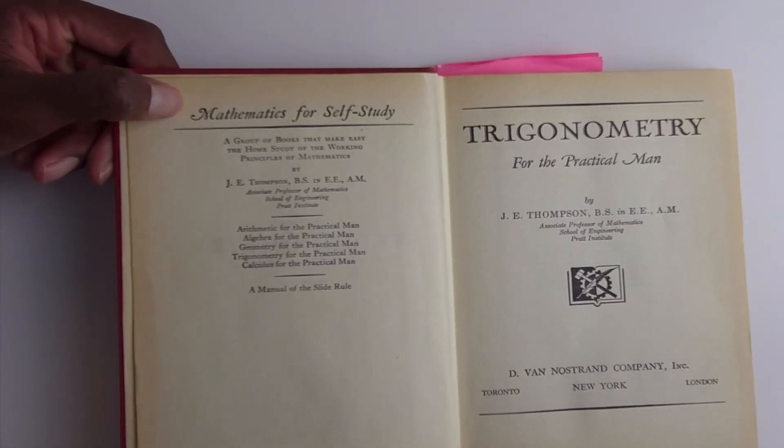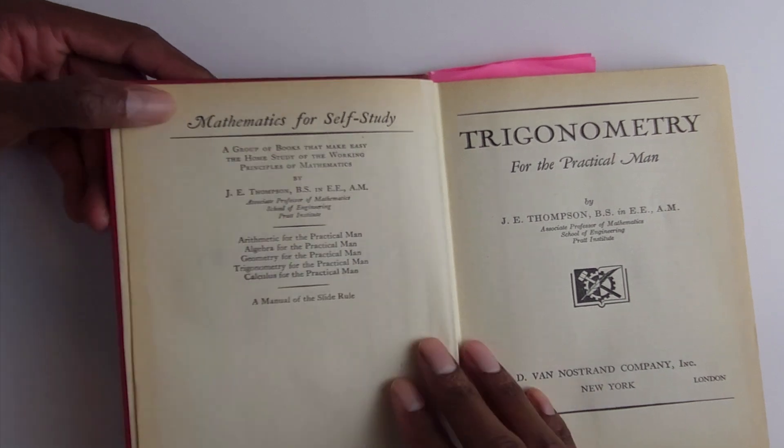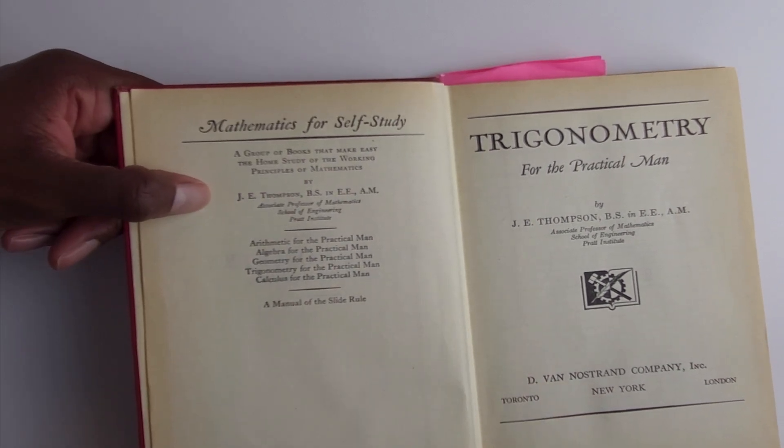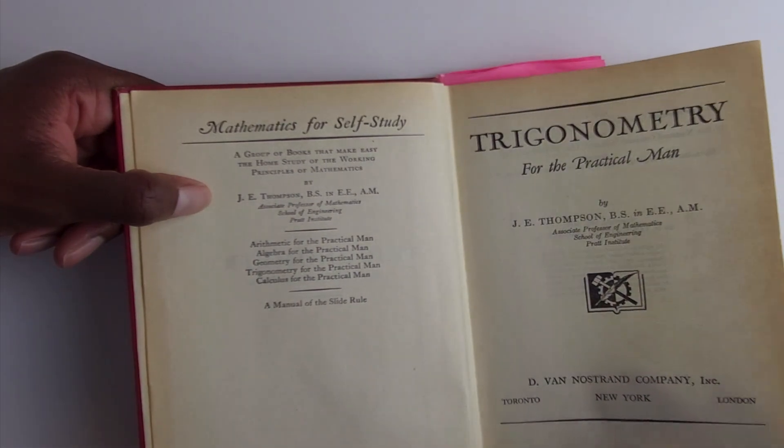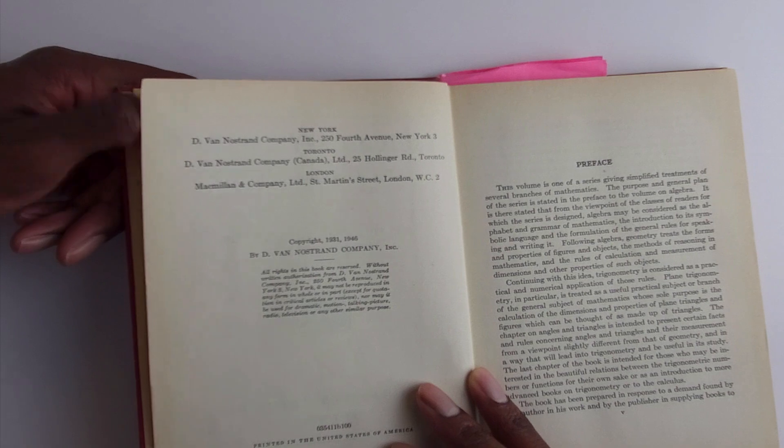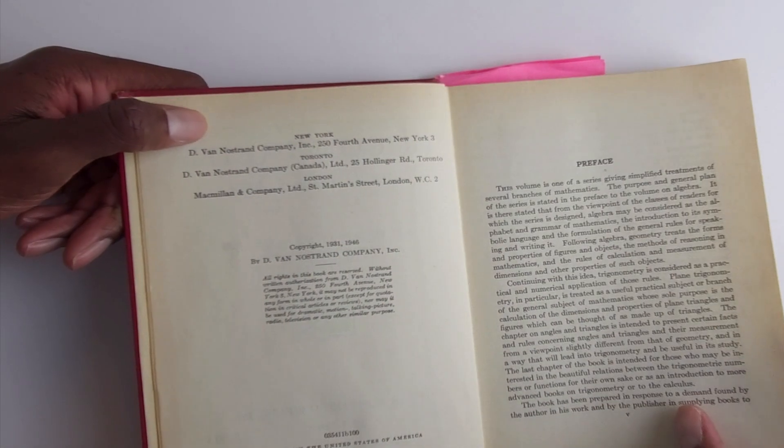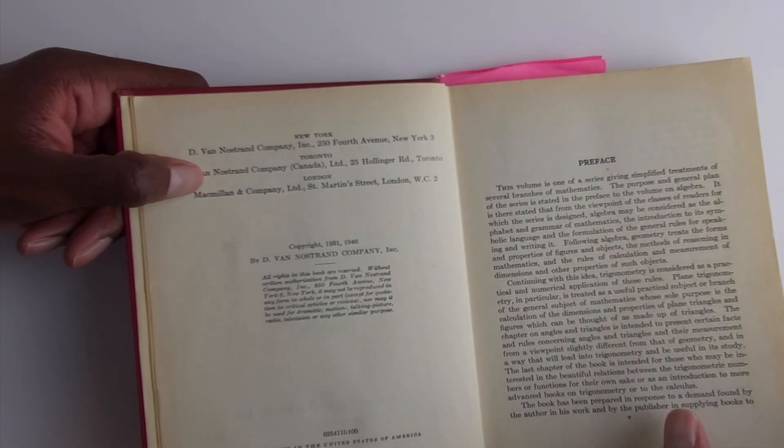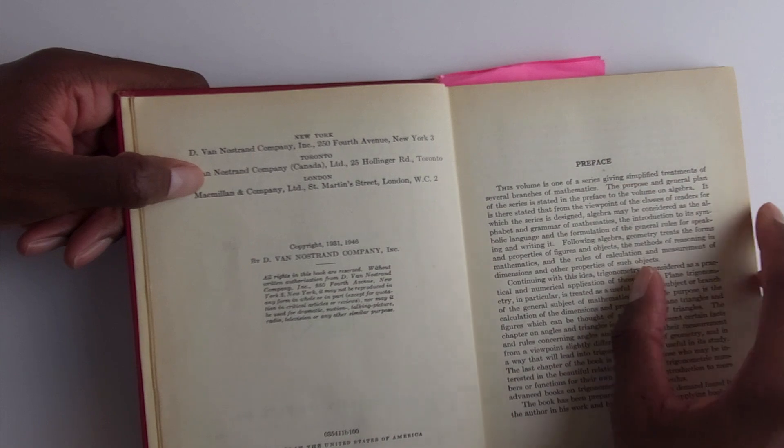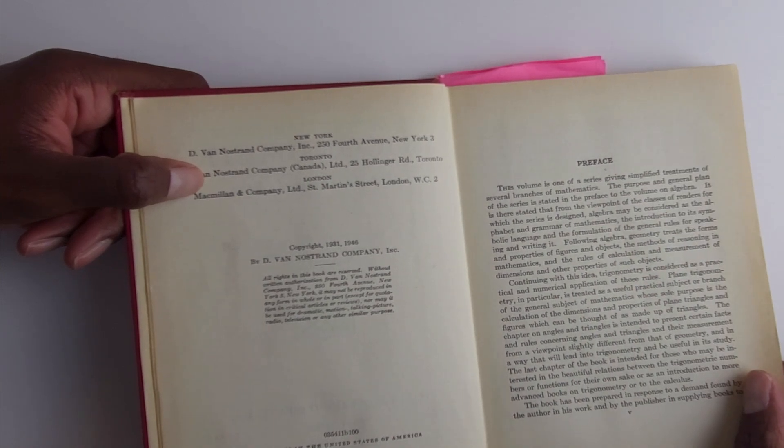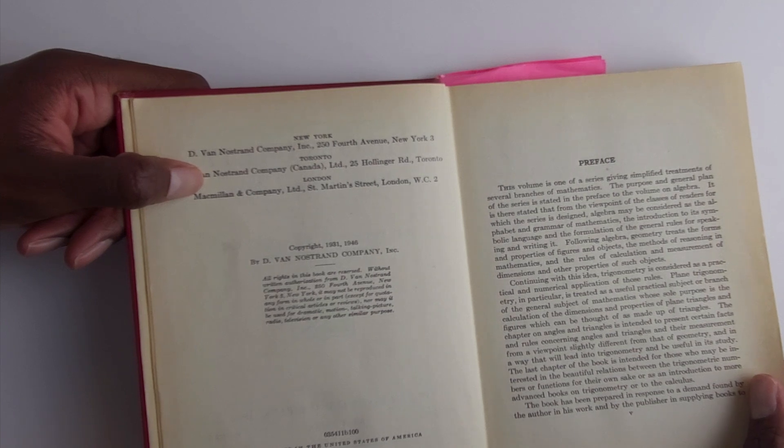So as we can see here is Trigonometry for the Practical Man from J.E. Thompson BS in electrical engineering AM, he was associate professor of mathematics school of engineering at Pratt Institute. This series was basically the second edition from 1946, so it's been out for quite a while but they're actually pretty good. As you can see, this volume is one of the series given simplified treatments of several branches of mathematics.